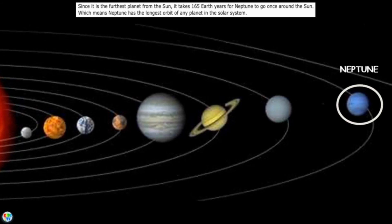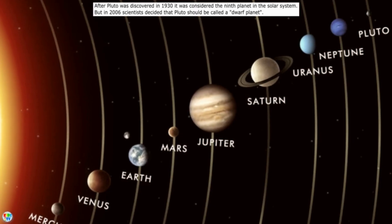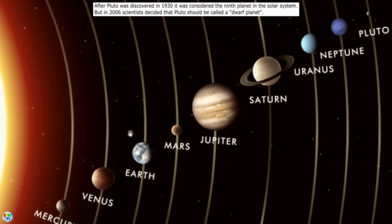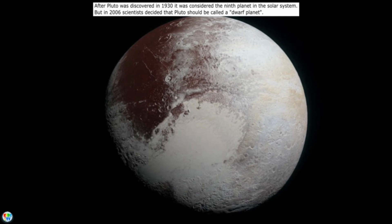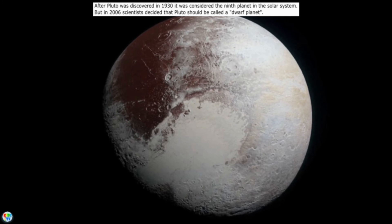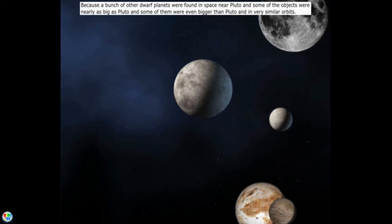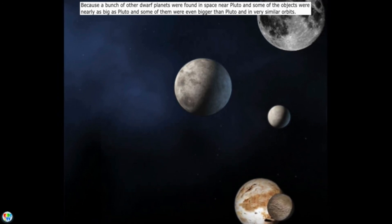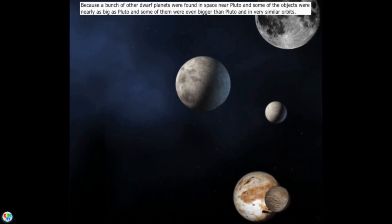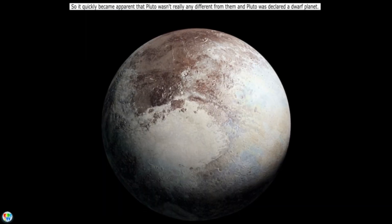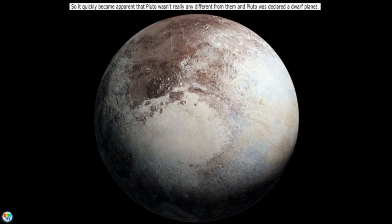After Pluto was discovered in 1930, it was considered the ninth planet in the solar system. But in 2006, scientists decided that Pluto should be called a dwarf planet because a bunch of other dwarf planets were found in space near Pluto. Some of the objects were nearly as big as Pluto and some of them were even bigger than Pluto, and in very similar orbits. So it quickly became apparent that Pluto wasn't really any different from them, and Pluto was declared a dwarf planet.